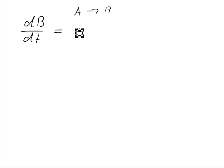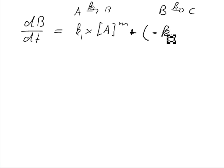So we have k1 times the concentration of A to the power of M, and the consumption B into C, plus minus k2 times the concentration of B to the power of N.